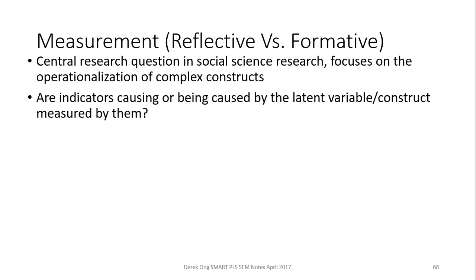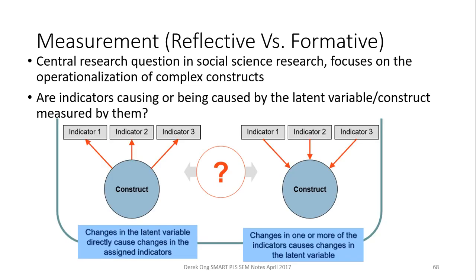Can indicators be causing or being caused by the latent variable construct measured by them? There's a difference between reflective and formative. Looking at the construct here, these are what we call reflective measures — changes in the latent variable directly cause changes in the assigned indicators. Anything that changes here will be reflected in these three, but it doesn't really affect the other two. Whereas in formative measures, changes in one or more of the indicators will cause change in the latent variable. So if you change one, the whole latent variable will change. This is the main difference between reflective and formative measures.